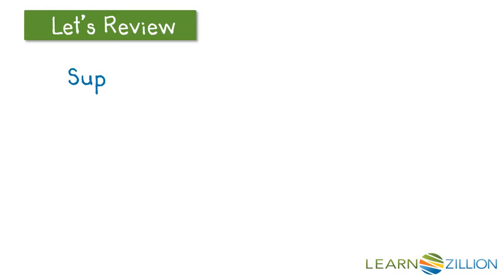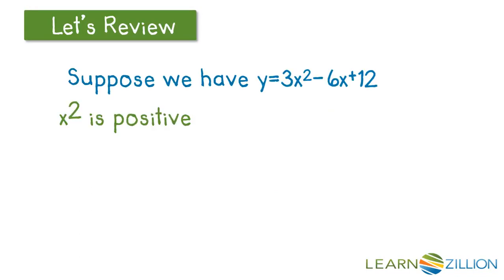Let's review. Suppose we have our function. Our x squared term is positive, so if we sketch a graph of this function, it's going to look like this. We're going to have a minimum value right here or a minimum point. Can we find the exact x and y values at this point? We need to rewrite our function first by completing the square.